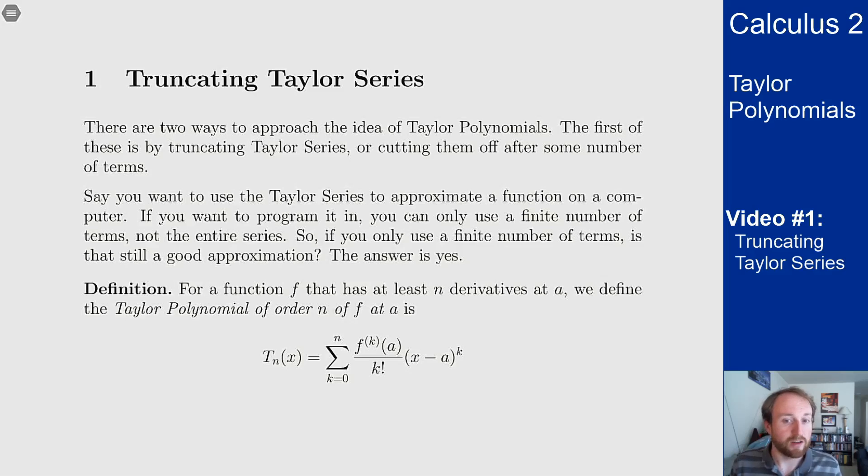The point of Taylor polynomials is these are those truncated things—these finite number of terms in the Taylor series. We want to know, is that still a good approximation of the function? In pretty much all cases where you'd want to use a Taylor series, the answer is yes. It's still a good approximation even if you only take a finite number of terms.